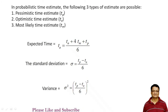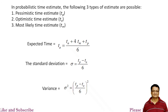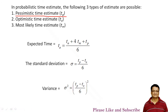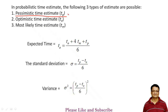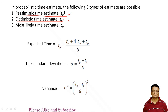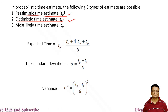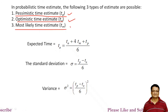There are three time estimations used in PERT. The first is pessimistic time estimation — if everything goes wrong, what time will it take? Optimistic time estimation — if everything goes well, what time will it take? And most likely time estimation, that is the average time estimation.